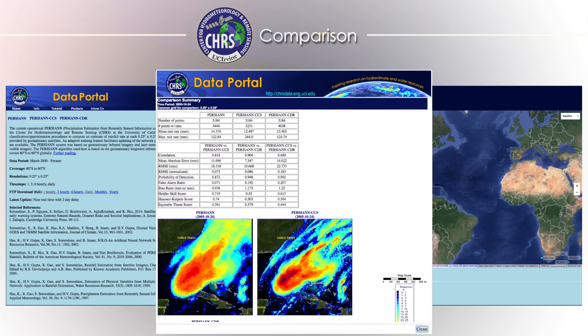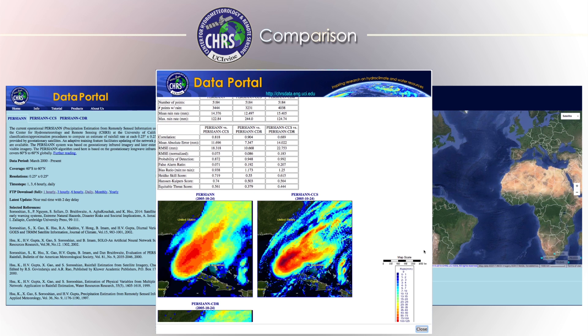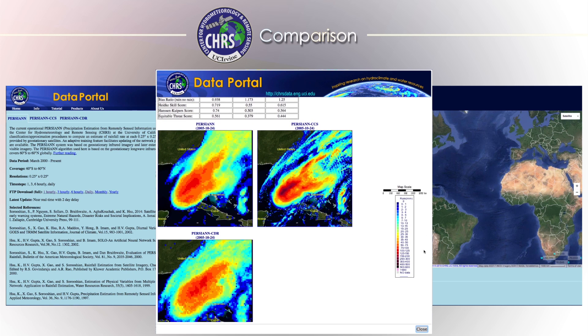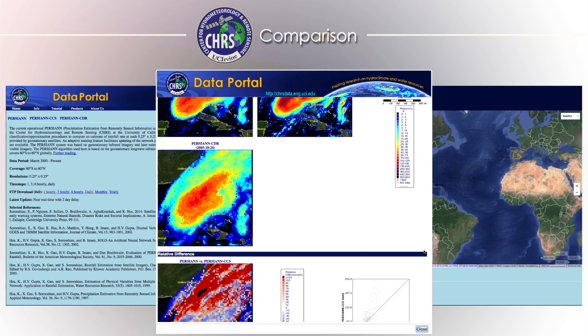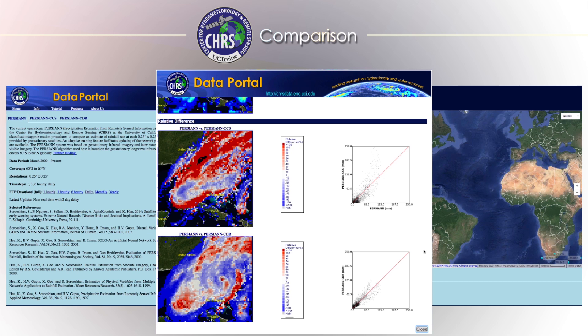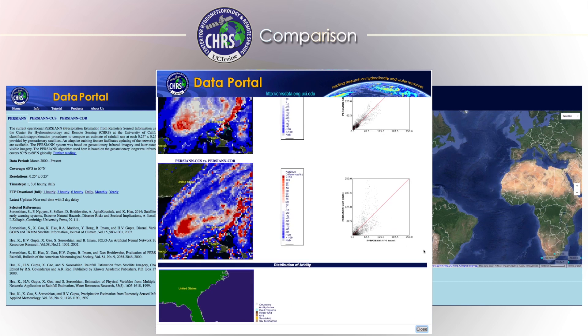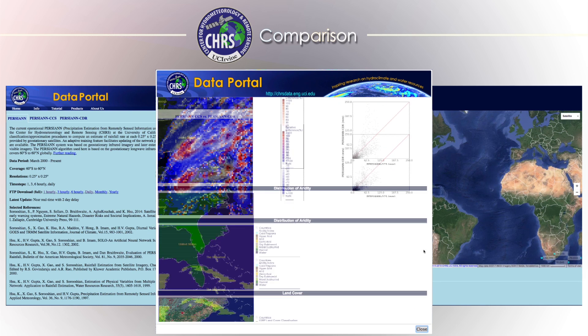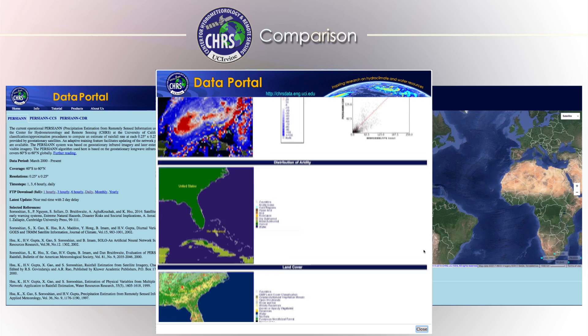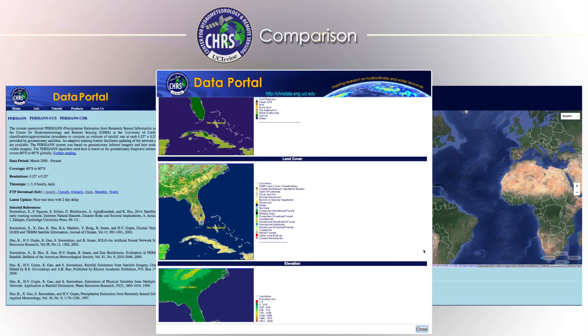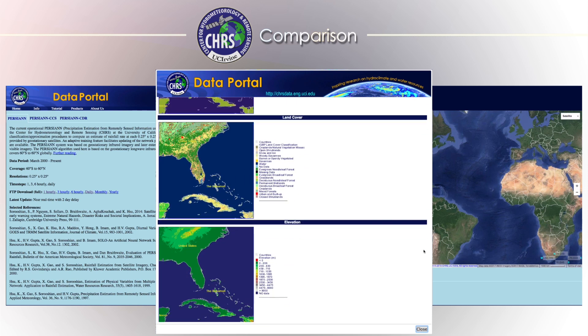When you click the Comparison button, a pop-up appears that contains statistical data, images of the data for each system, and comparison images of the different data sets. In addition, maps of geographic information are displayed at the bottom of the report, including aridity distribution, land cover distribution, and an elevation profile.